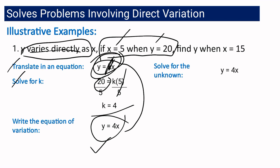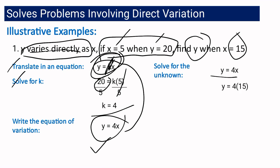Lastly, we solve for the unknown using the equation of variation. The question asks: what is y when x is 15? Substituting into y equals 4x, we get y equals 4 times 15, so y equals 60. Meaning, y is 60 when x is equal to 15. As simple as that.